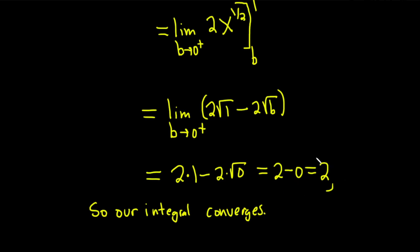So that part's done. And the value is actually just 2. 2 is what we get. So our integral, we say it's equal to 2. So you could say that the integral from 0 to 1 of 1 over the square root of x dx is equal to 2. And because it's equal to a number, we say it converges.